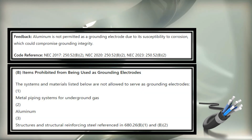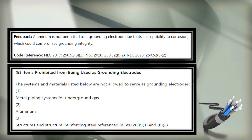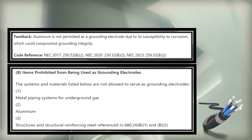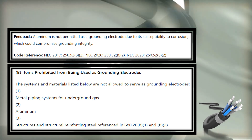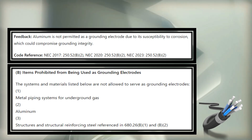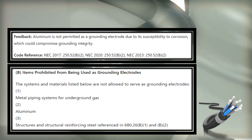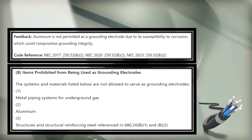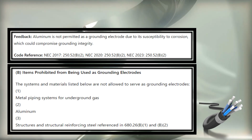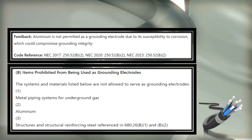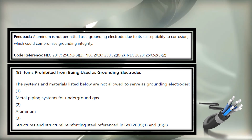When we head over there, there are a few things that we are not allowed to use as a grounding electrode. B1 is metal piping systems for underground gas — we don't want to use those as part of the grounding electrode system. Aluminum is specifically called out as well.